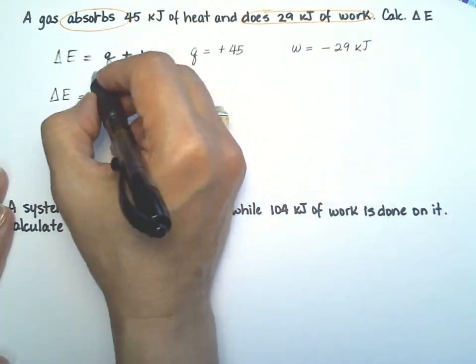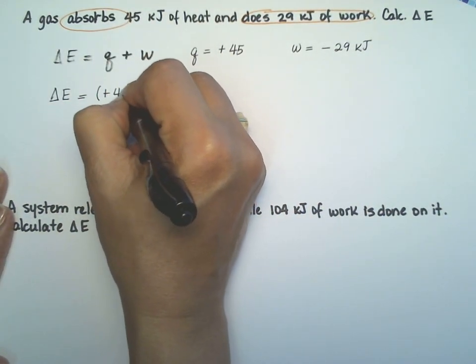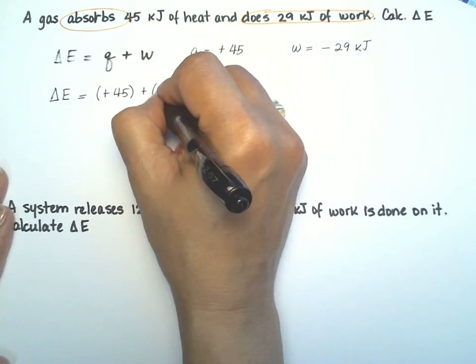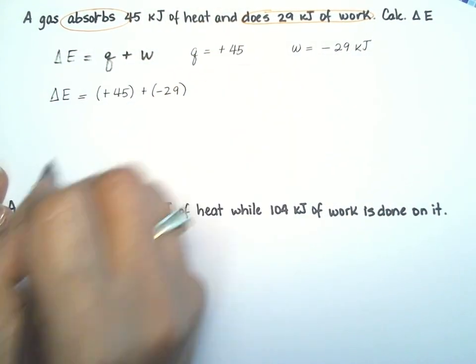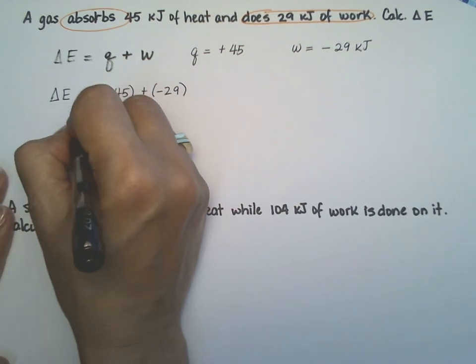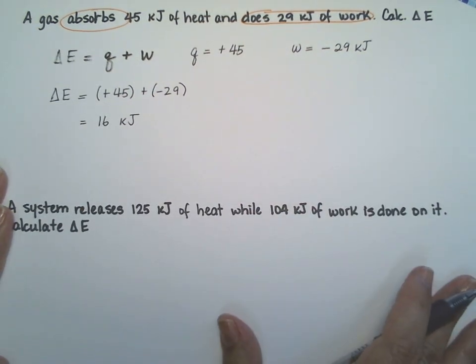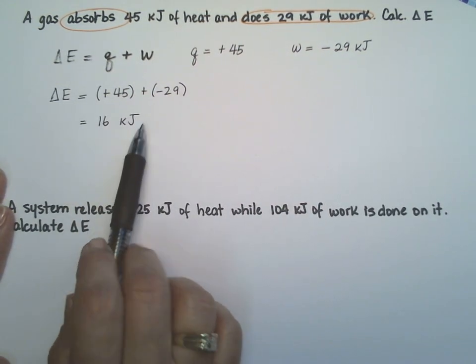Now we go to our formula. We plug in our numbers. So we have a plus 45 and we have a negative 29. So you do that calculation and it gives you that the change in energy for the reaction is going to be 16 kilojoules.